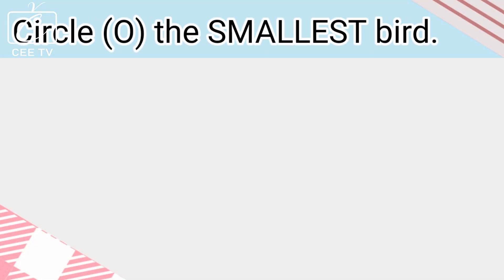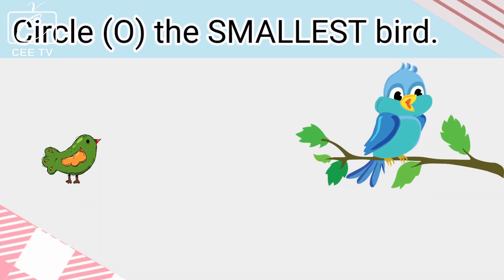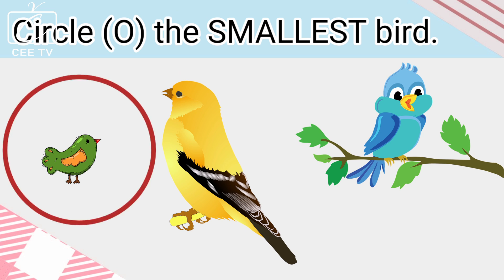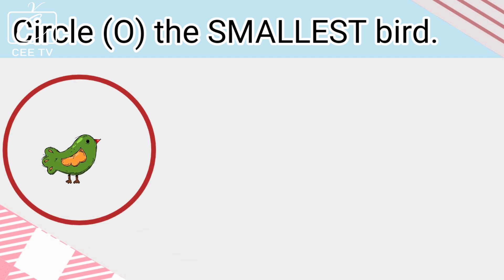Circle the smallest bird. The green bird is the smallest bird. Very good! The green bird is the smallest bird.